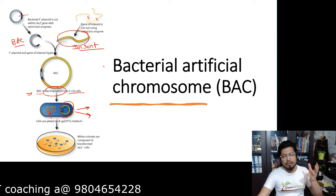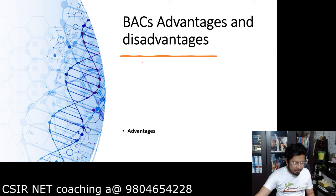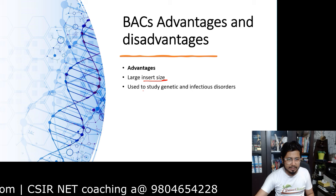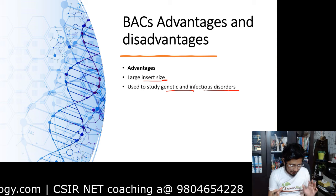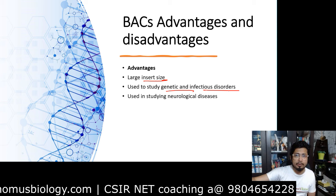The advantages of BAC include the ability to clone large insert sizes, and it can be used to study genetic and infectious disorders — particularly bacterially mediated infections — as well as neuronal diseases like Alzheimer's disease. Studies of Alzheimer's disease in higher eukaryotes like mouse or human models can be carried out using Bacterial Artificial Chromosomes.